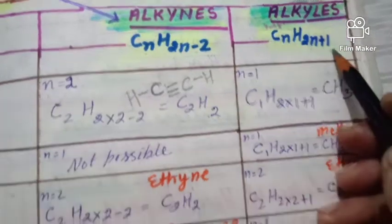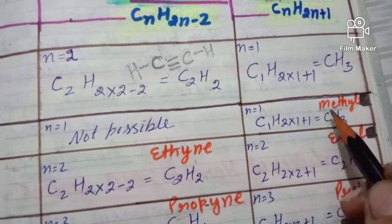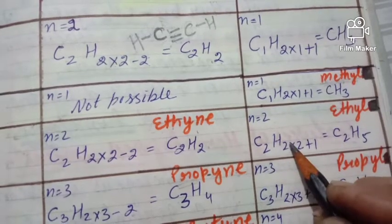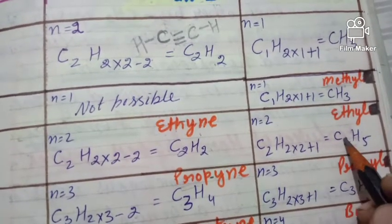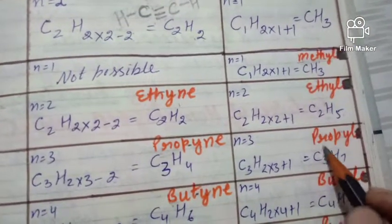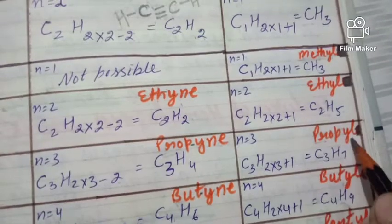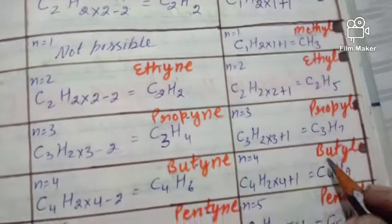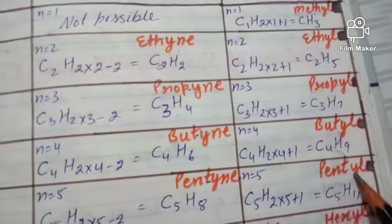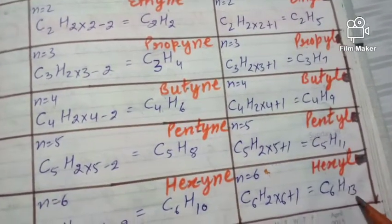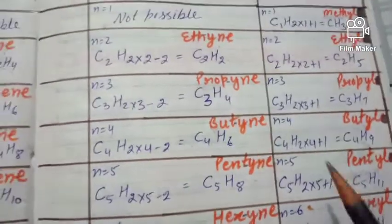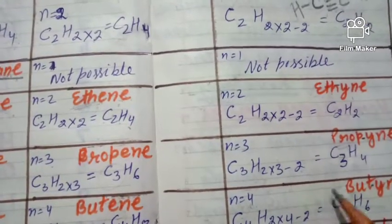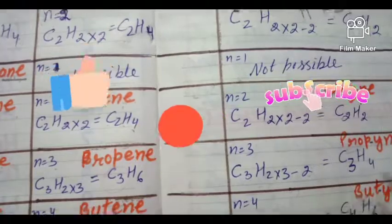For the alkyl series CnH2n+1: the first member is methyl (CH3). For n = 2: C2H(2×2+1) = C2H5 = ethyl. For n = 3: C3H7 = propyl. For n = 4: C4H9 = butyl. For n = 5: C5H11 = pentyl. For n = 6: C6H13 = hexyl, and so on. Thank you — I hope you liked this video; please like, share, and subscribe.